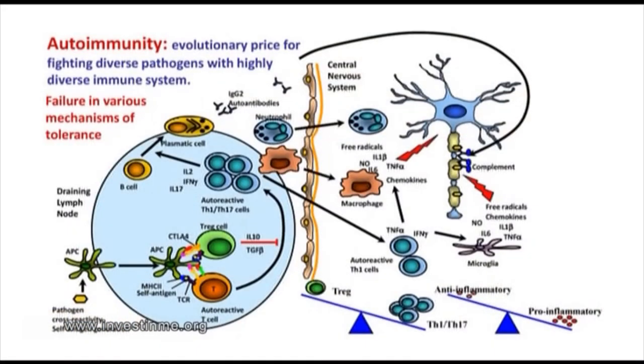Luckily, we have regulatory cells that are patrolling our body and controlling the activation and expansion of auto-reactive cells. But in some cases, genetic and environmental factors cause some of these tolerance mechanisms to fail. And 10% of us in this room will suffer an autoimmune disease during our lifetime.